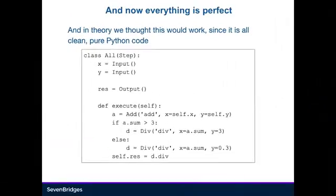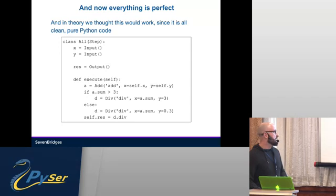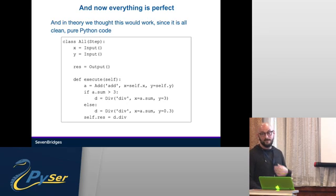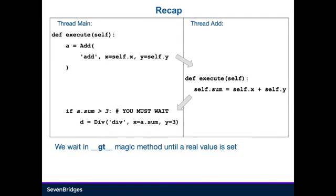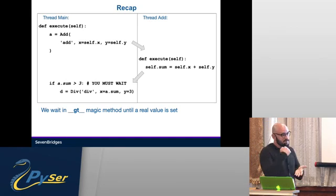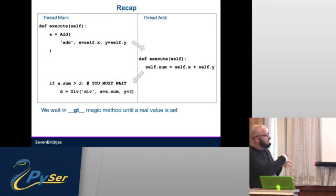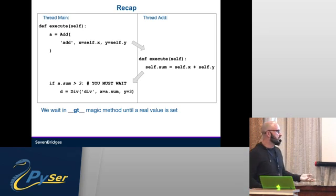Now everything is perfect — you have branching in the model, you can create different steps and sub-steps and connect them in any way. It's all simple Python that you don't have to think about; you don't have to worry about synchronizing threads yourself. You know execution will happen as soon as possible. So you have an Add step which goes in a separate thread and creates a result. Then when you access the sum, since it's a Promise, it waits. Once Add finishes, the value becomes available, informs back the thread that needs it, and execution continues.